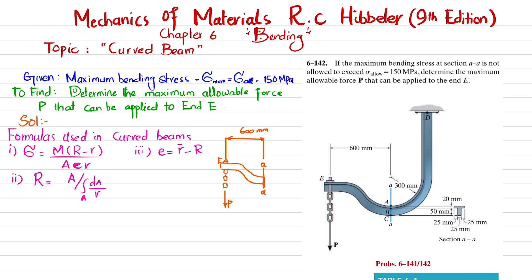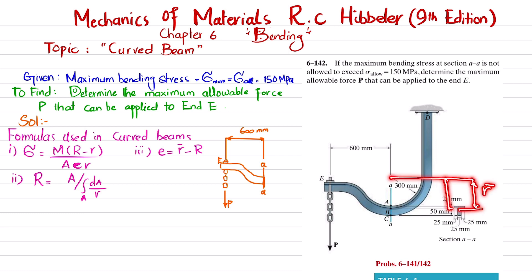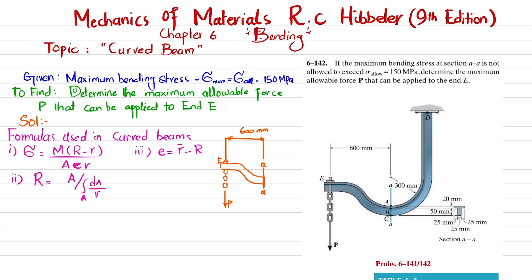Let's start with the solution. The formula used in curved beam analysis is the stress formula involving R-dash and R-capital. R-dash is the distance from the center of curvature to the centroid of the section, and R-capital is the distance from the center of curvature to the neutral axis. In curved beams, the neutral axis and centroidal axis do not coincide. R-capital can be obtained using a standard integral formula.